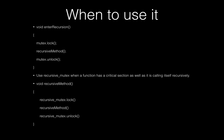So when should you be using a recursive mutex? Let's say you want to enter a recursive method. You might create a method called enter_recursion as an entry point — you would lock the mutex, enter the recursive method which calls itself again and again, and then unlock the mutex once control comes out of the function. You should use recursive mutex in cases where your function has a critical section and is also calling itself recursively.